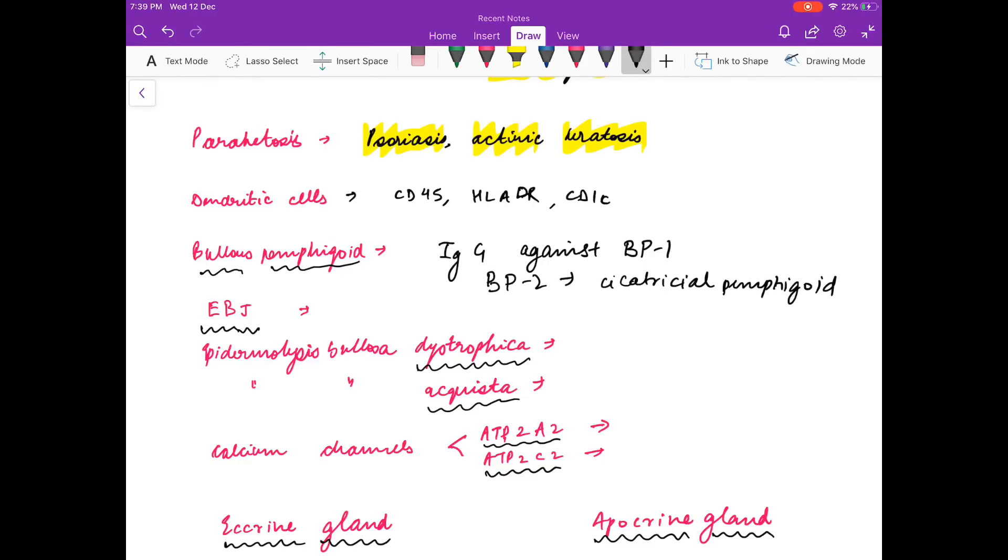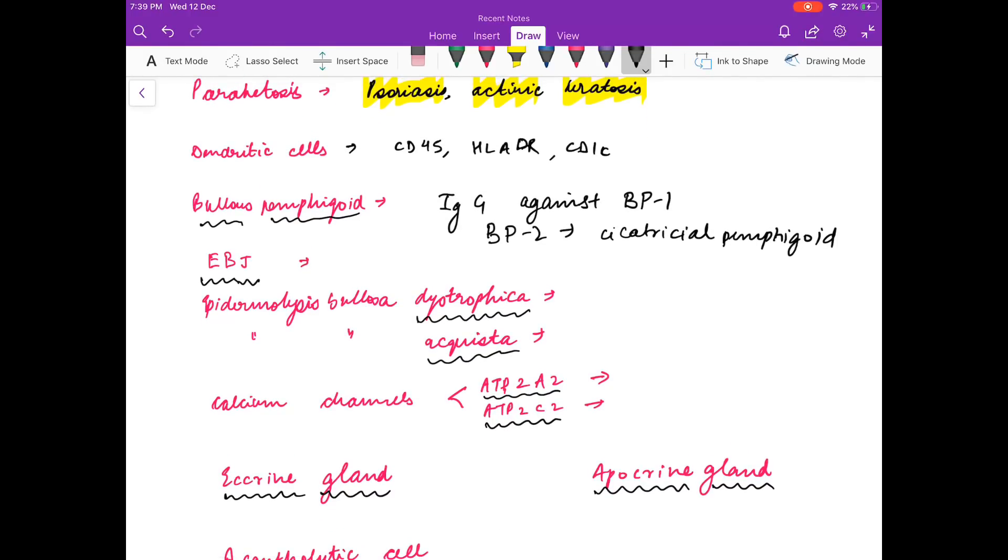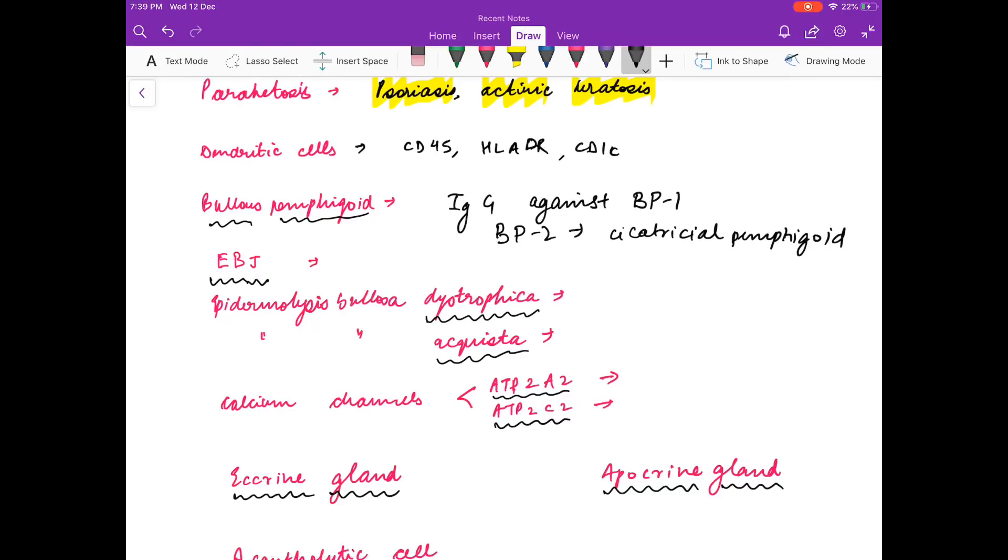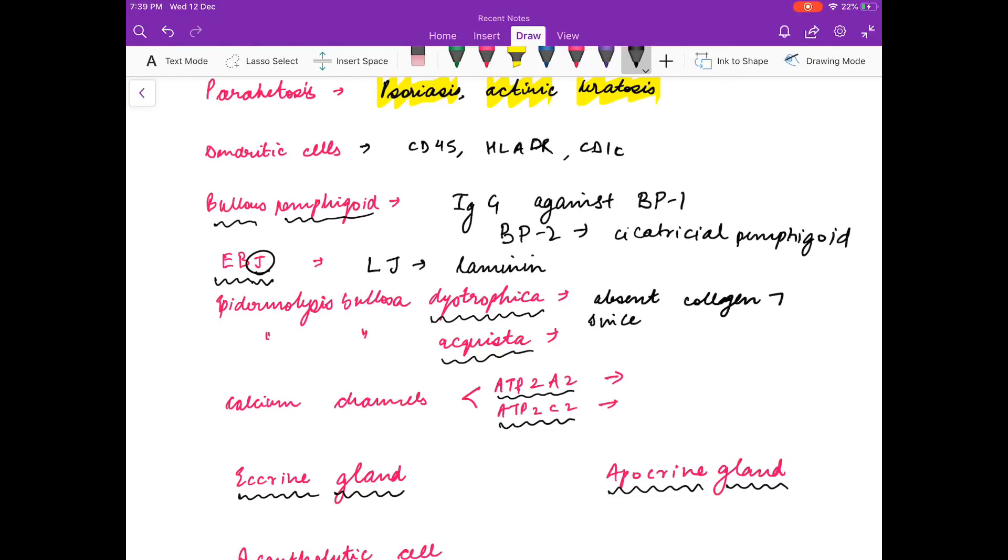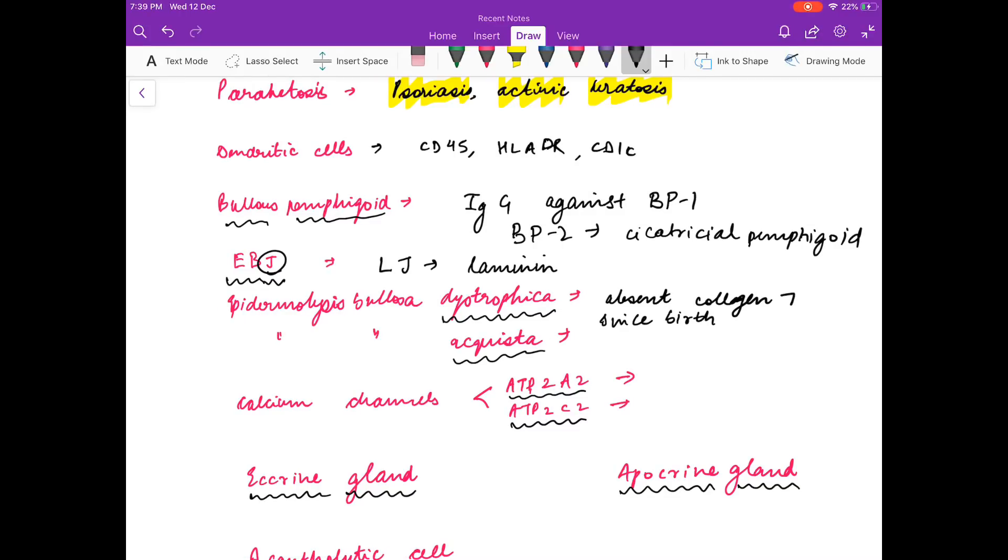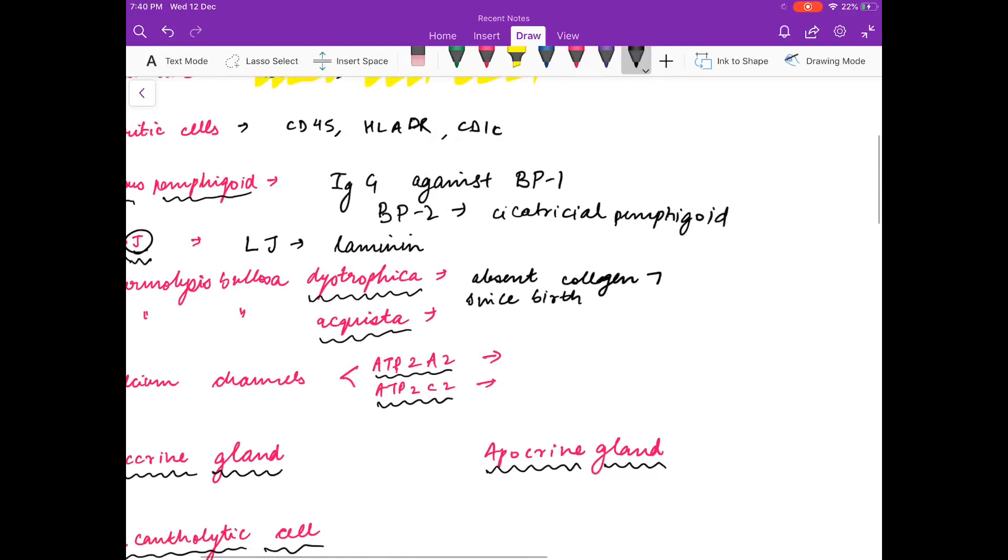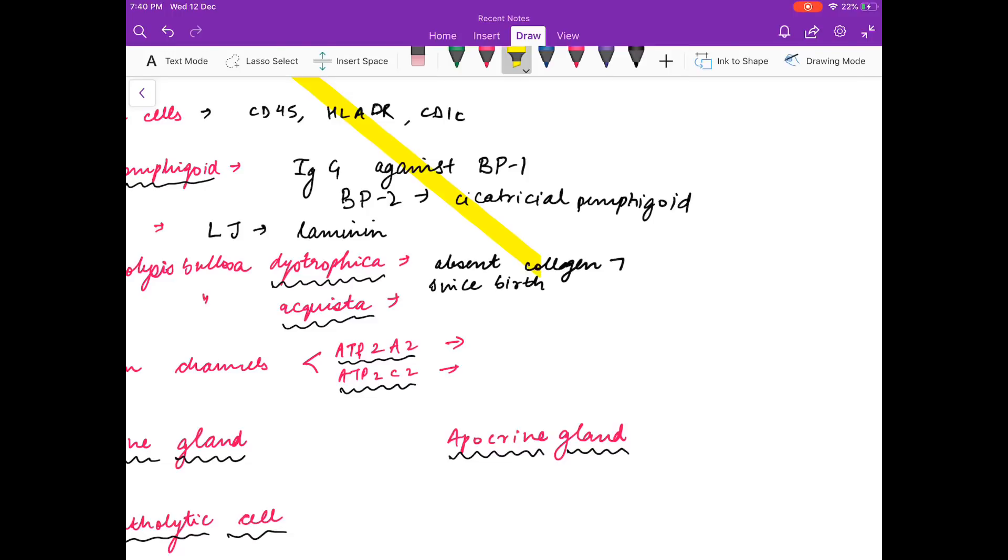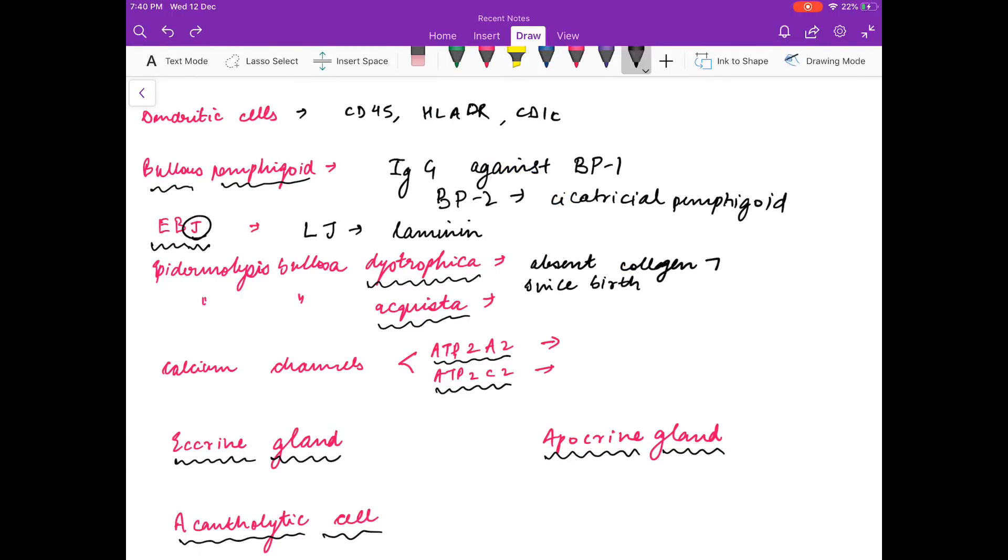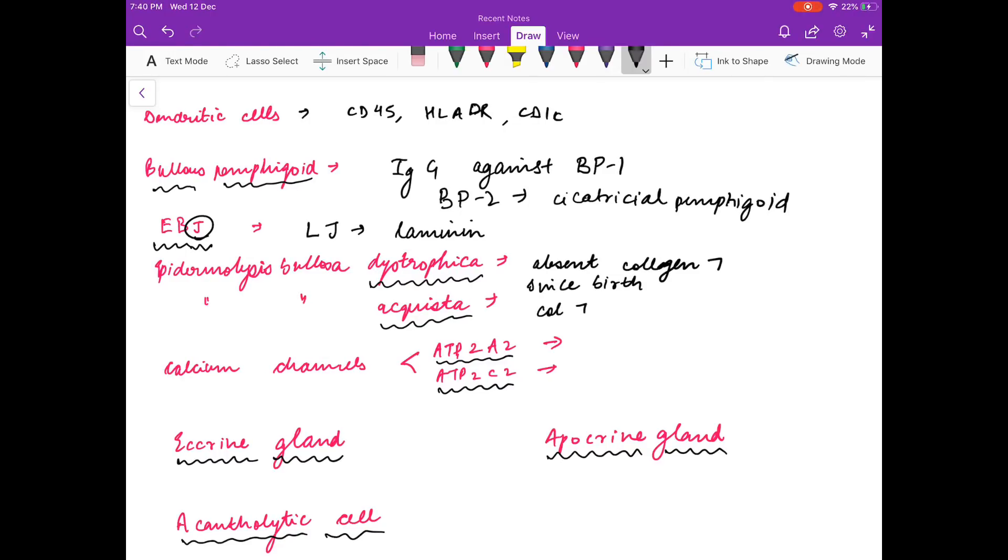Against which molecule are antibodies formed in epidermolysis bullosa junctionalis? I have learned it with a mnemonic LJ: L stands for laminin and J is junctionalis. In dystrophica, epidermolysis bullosa dystrophica, there is absent collagen 7 since birth because it is congenital. So absent collagen 7 since birth. In acquisita, the antibodies are against collagen 7.